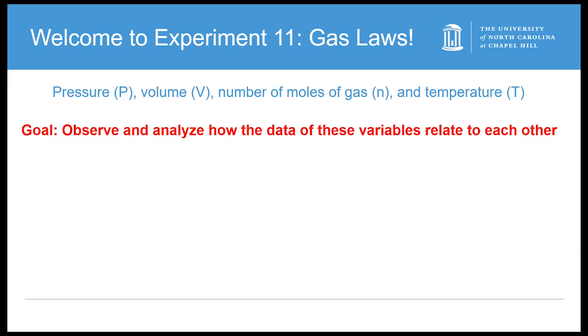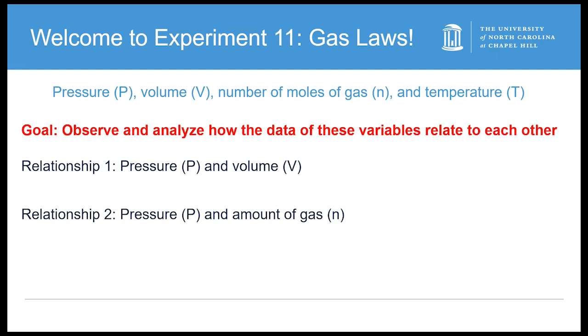The three relationships we are going to test are pressure with respect to volume keeping the amount of gas and temperature constant, pressure with respect to the amount of gas keeping the volume and temperature constant, and how pressure varies while changing temperature keeping the amount of gas and volume constant.